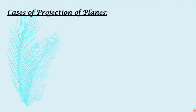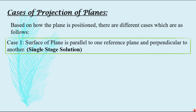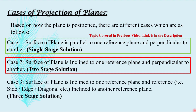As discussed in our previous video, based on the positioning of the plane, different cases are possible. Case one: surface of plane is parallel to one reference plane and perpendicular to another — single stage solution, covered in the previous video. Case two: surface of plane is inclined to one reference plane and perpendicular to another — two stage solution, today's topic. Case three: surface of plane is inclined to one reference plane and a side edge or diagonal is inclined to another reference plane — three stage solution.